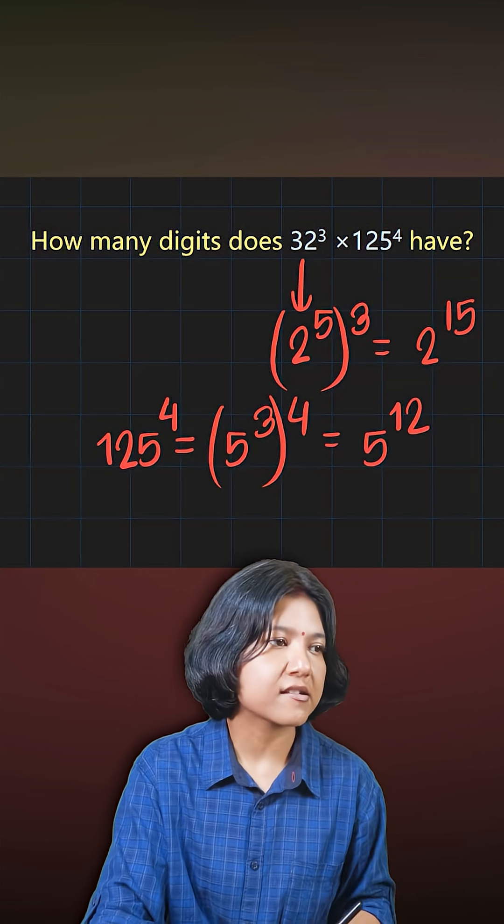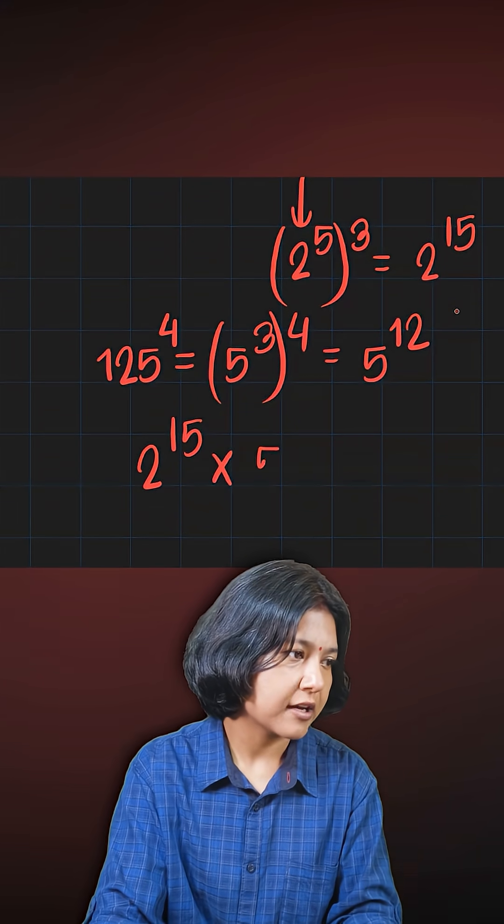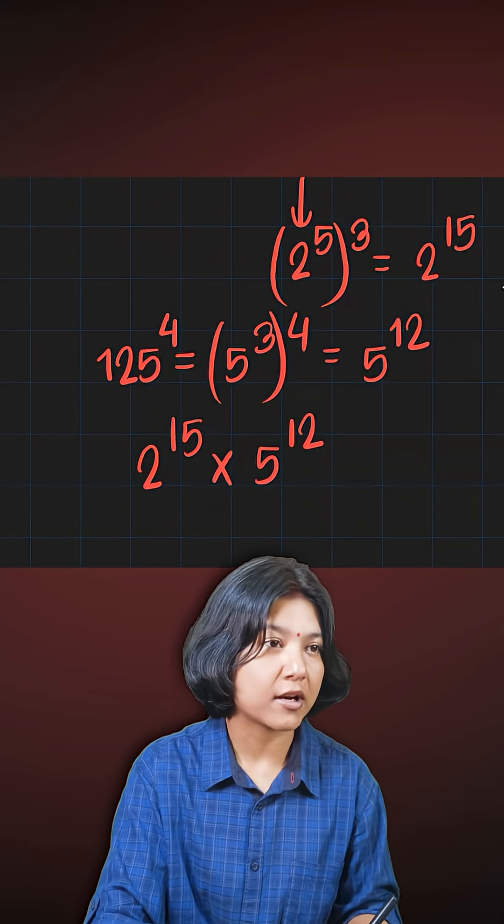So the other way I can write this number is 2 to the power of 15 times 5 to the power of 12. Now what to do from here is to equalize the powers.